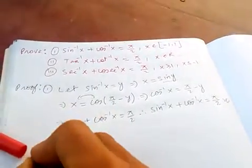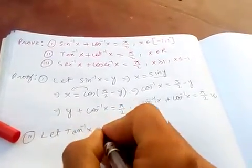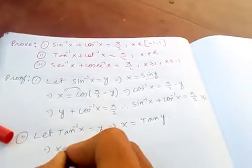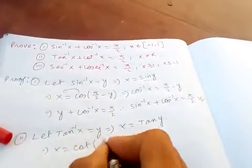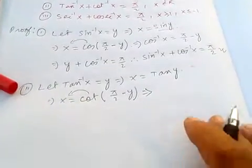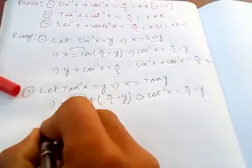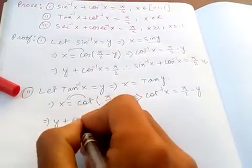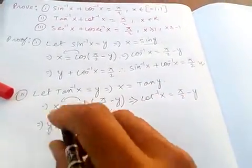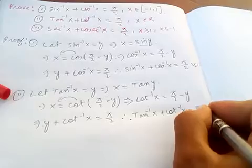For the second identity, let tan inverse of x equal y, so x equals tan of y. In terms of cot, we convert it to cot of pi by 2 minus y. So transferring the terms, cot inverse of x is equal to pi by 2 minus y, and therefore y plus cot inverse of x equals pi by 2. Since y is tan inverse of x, tan inverse of x plus cot inverse of x equals pi by 2.